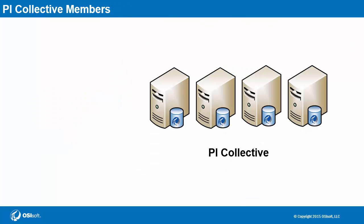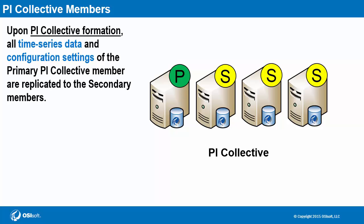A few more notes on PI data archive replication. When a PI collective is first formed, you designate one PI data archive as a primary server. The rest are all secondary members, and they are essentially wiped out and then made to be identical with the primary server. This ensures that any existing time series data as well as configuration settings are the same across all members right from the birth of the PI collective.